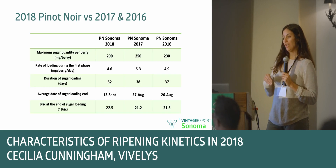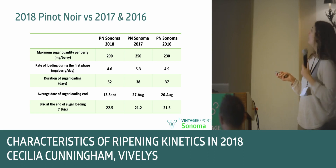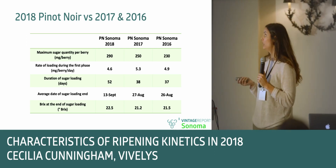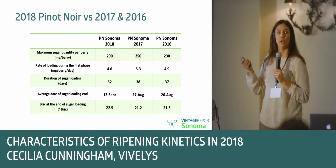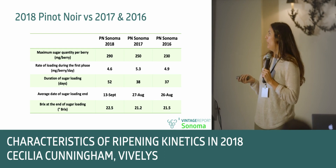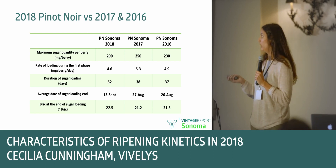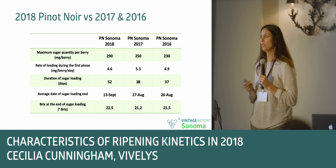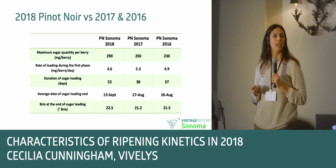If we compare the last three years, 2018 had much more sugar at the end than 2017 and even 2016. 2017 was already considered a good year in terms of load, especially for Pinot — Cabernet is not always the same. We had 52 days compared to 37 or 38 days, so very, very long. Really good Brix at the end. So in our parameters and with the models, this would indicate a really good harvest in terms of aromatic profile and quality of the wines.